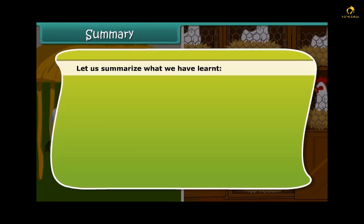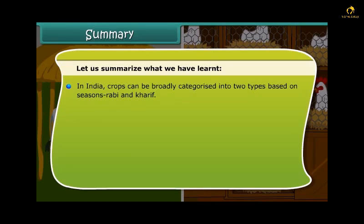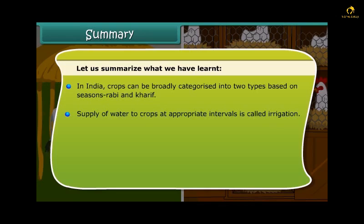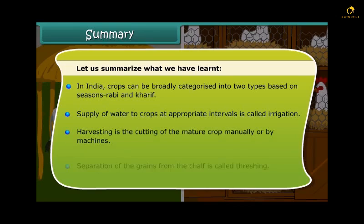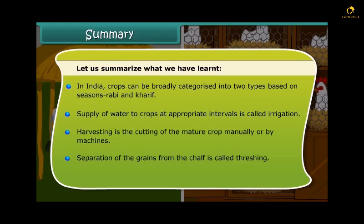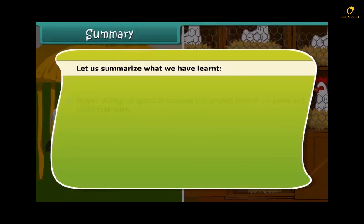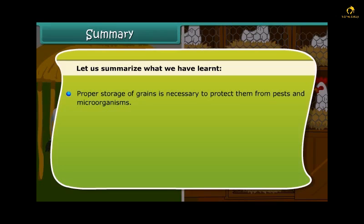Now let us summarize what we have learned. In India, crops can be broadly categorized into two types based on the seasons they are grown in: Rabi and Kharif. Supply of water to crops at appropriate intervals is called irrigation. Harvesting is the cutting of the mature crop manually or by machines. Separation of the grains from the chaff is called threshing. Proper storage of grains is necessary to protect them from pests and microorganisms. Animal husbandry means rearing and breeding livestock on a large scale.